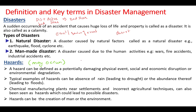Now let us see what is a hazard. A hazard can be defined as a potentially damaging physical event, social or economic disruption, or environmental degradation. A typical example of hazard can be the absence of rain which leads to drought, and the abundance of rain that leads to flood. Another example: a chemical manufacturing plant near a settlement and incorrect agriculture techniques can also be seen as a hazard and could lead to a possible disaster. So hazard is something that leads to disaster, and it can be the creation of man or the environment.